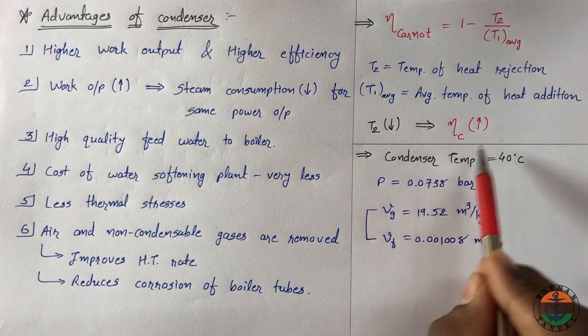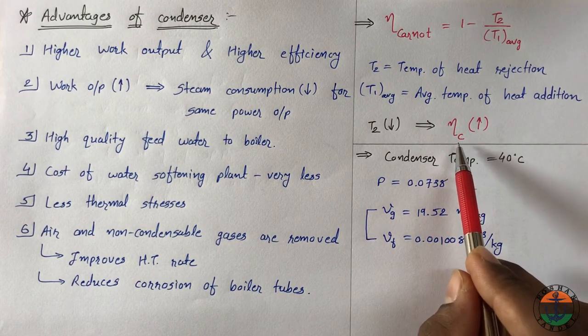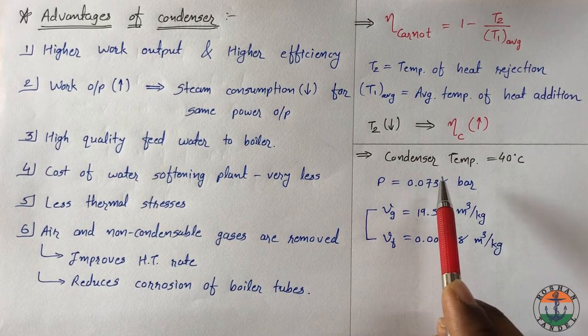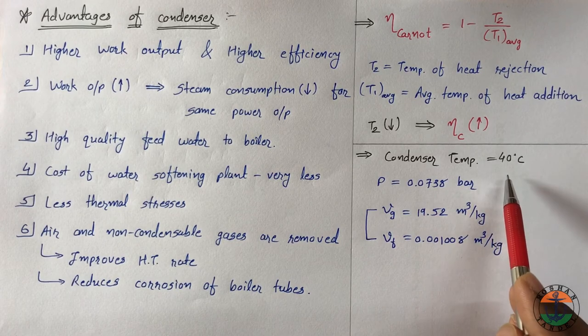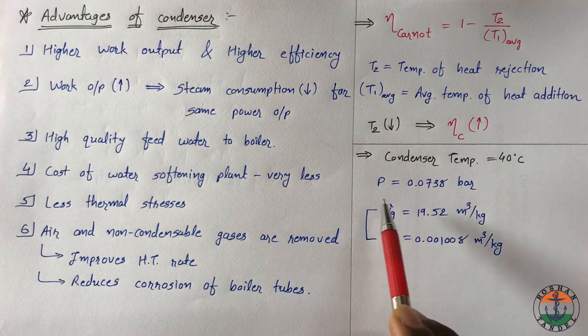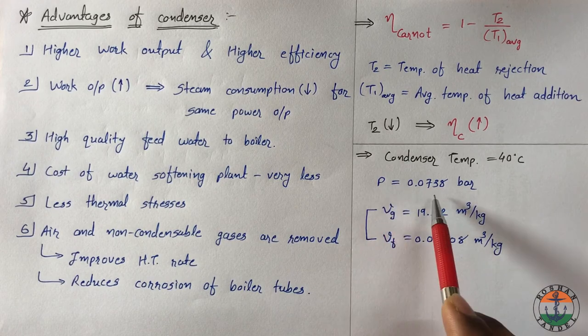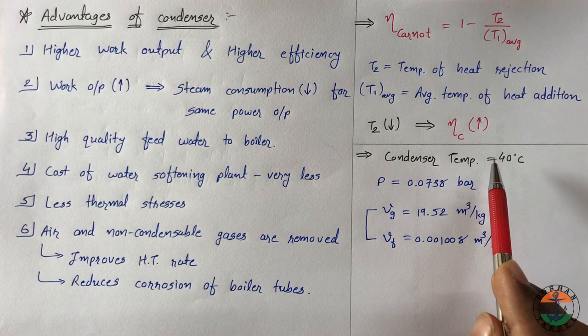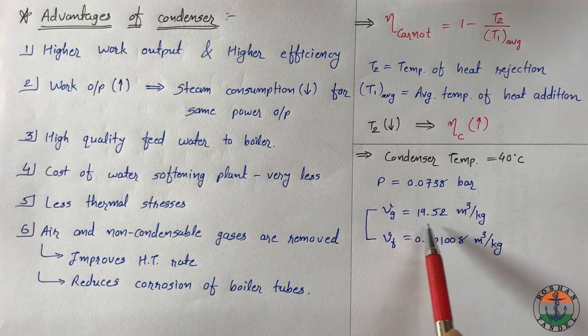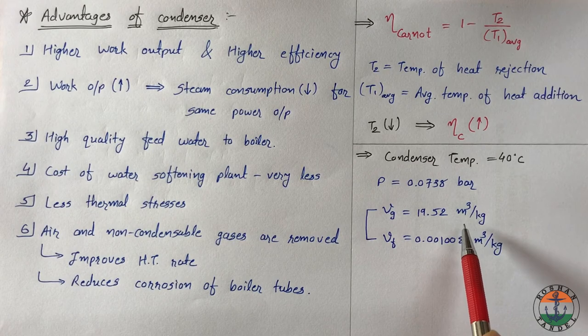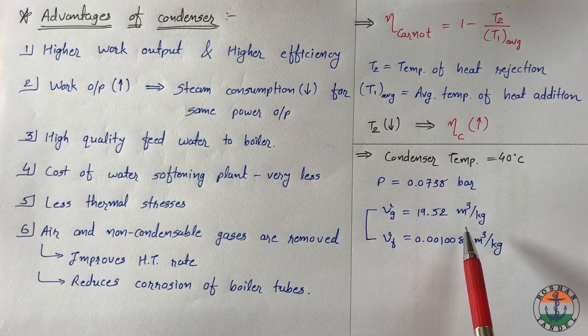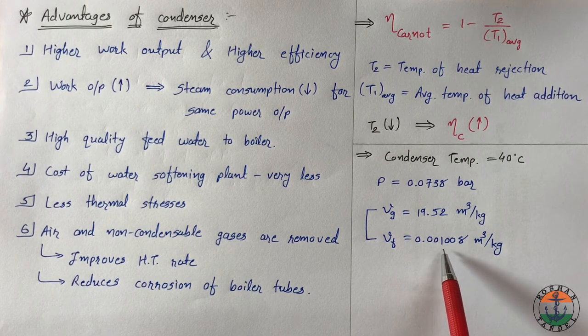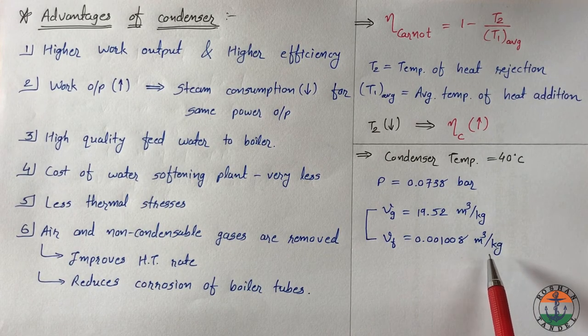Now let us take condenser temperature equal to 40 degree Celsius. At 40 degree Celsius saturation pressure is 0.0738 bar. In this condition 1 kg of steam occupies 19.52 meter cube of volume, whereas after condensation it occupies only 0.001008 meter cube of liquid.